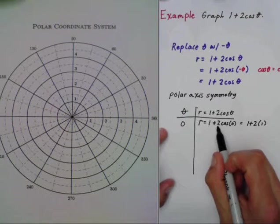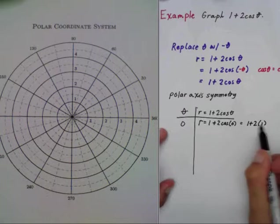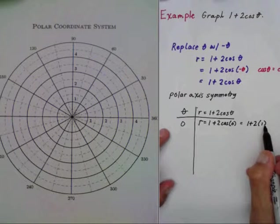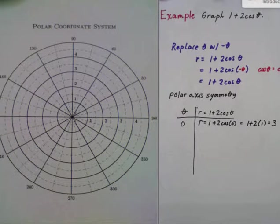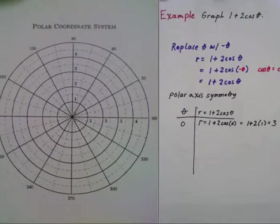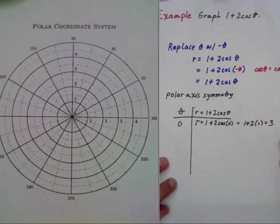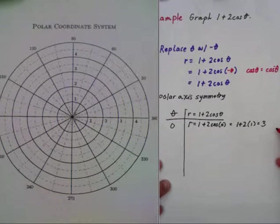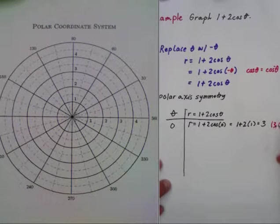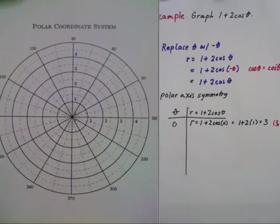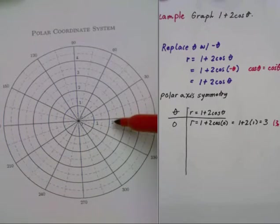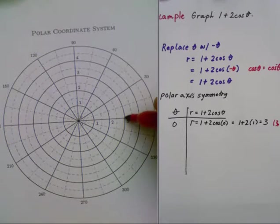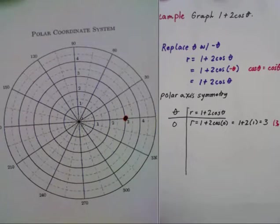Cosine of zero is one, so two times one gives us three. Now I can plot three comma zero. Let's look at that. Where's three comma zero? I go over one, two, three, and it's right here. There is three comma zero.